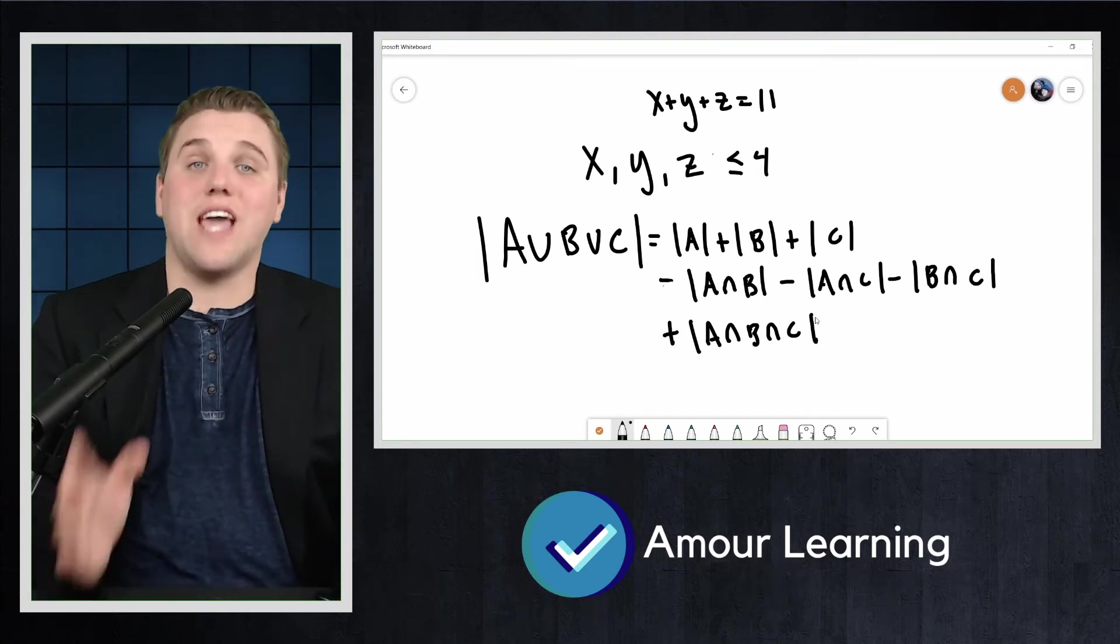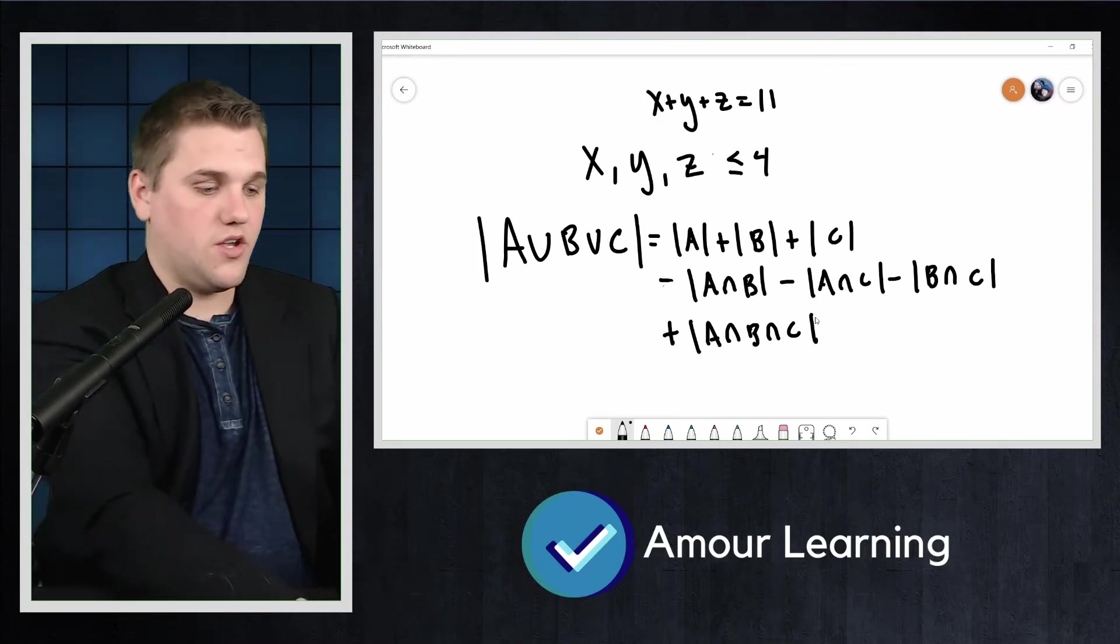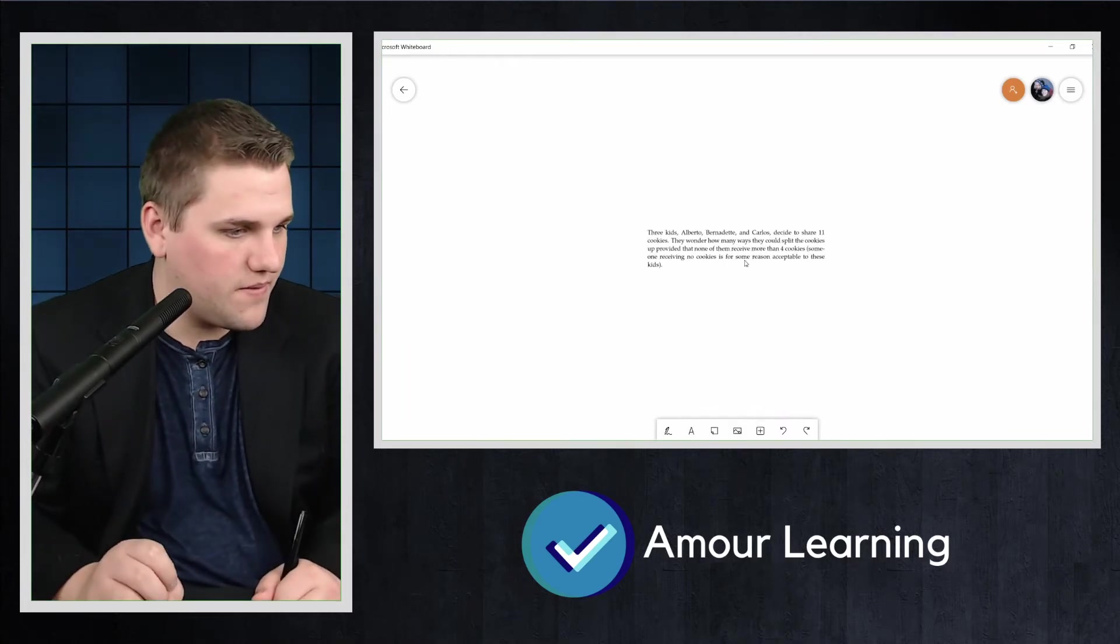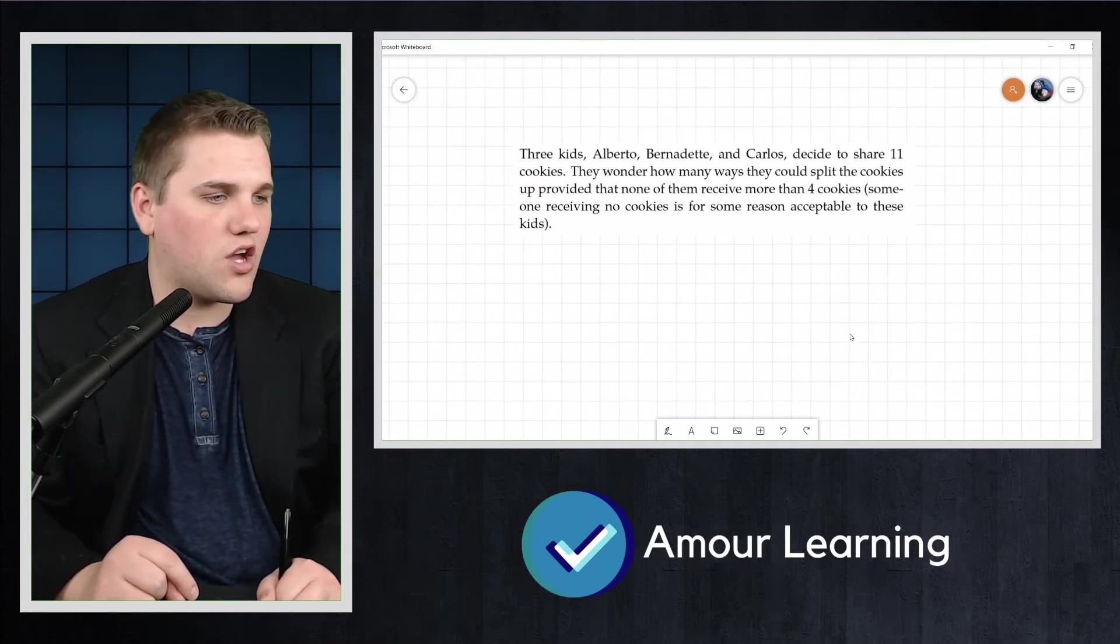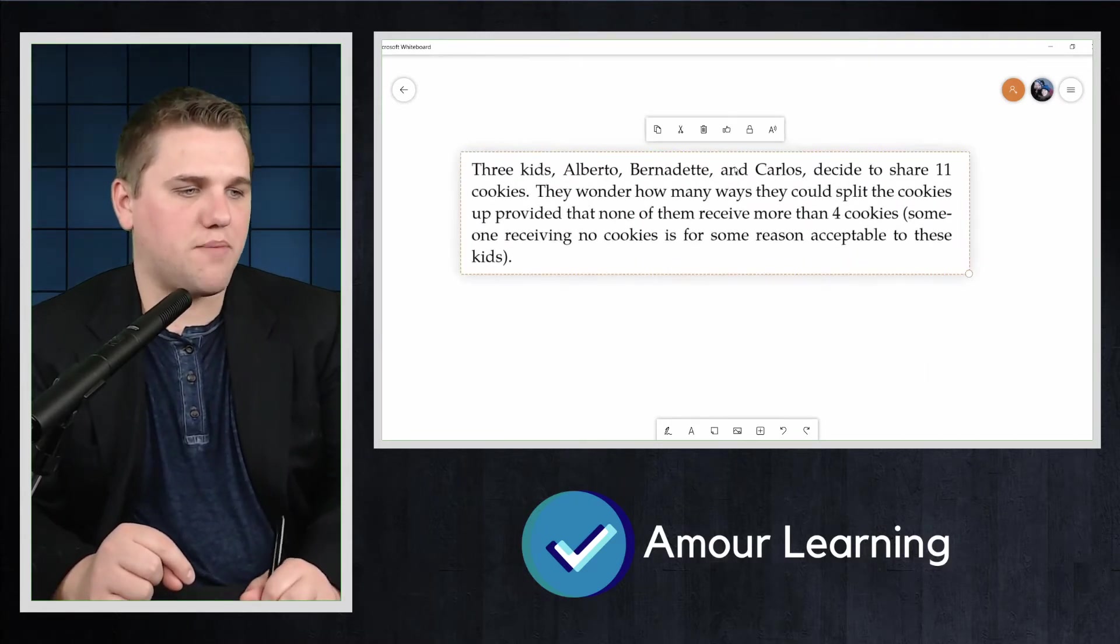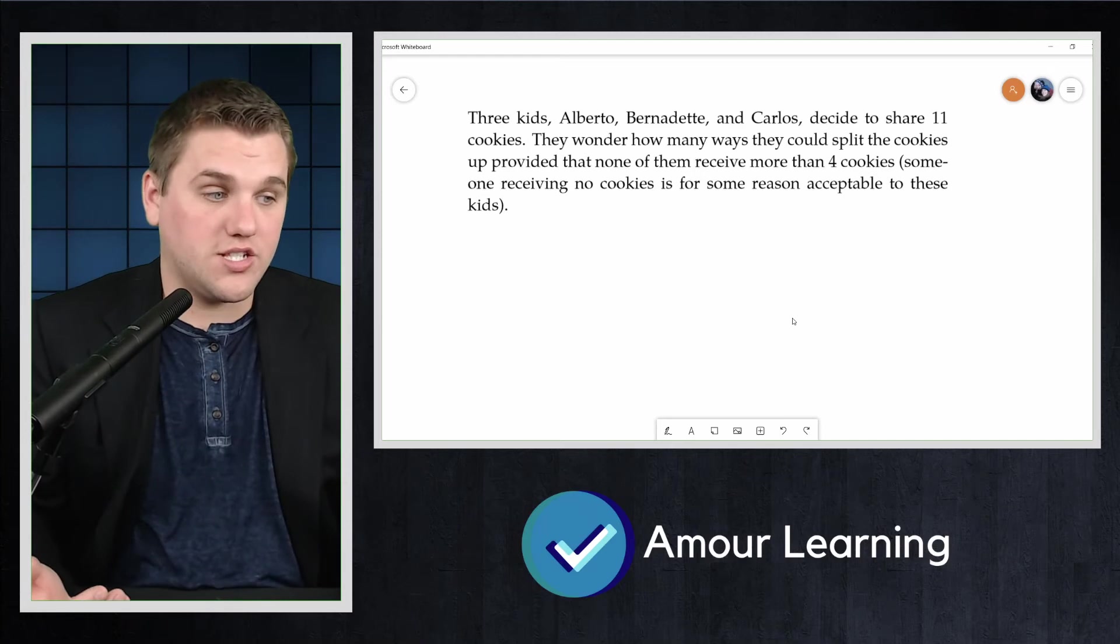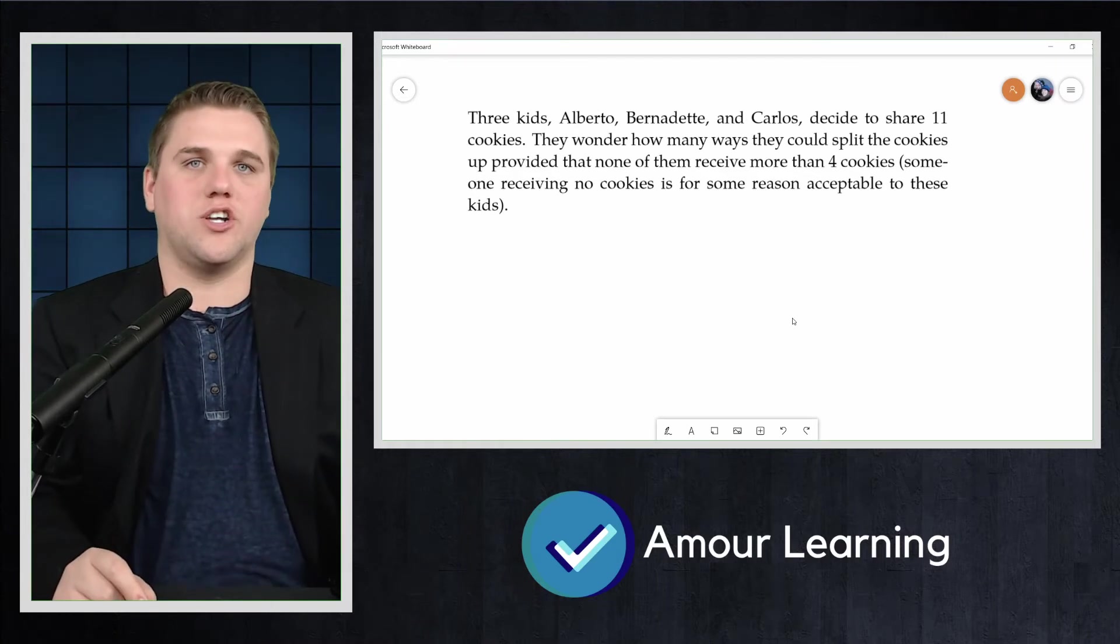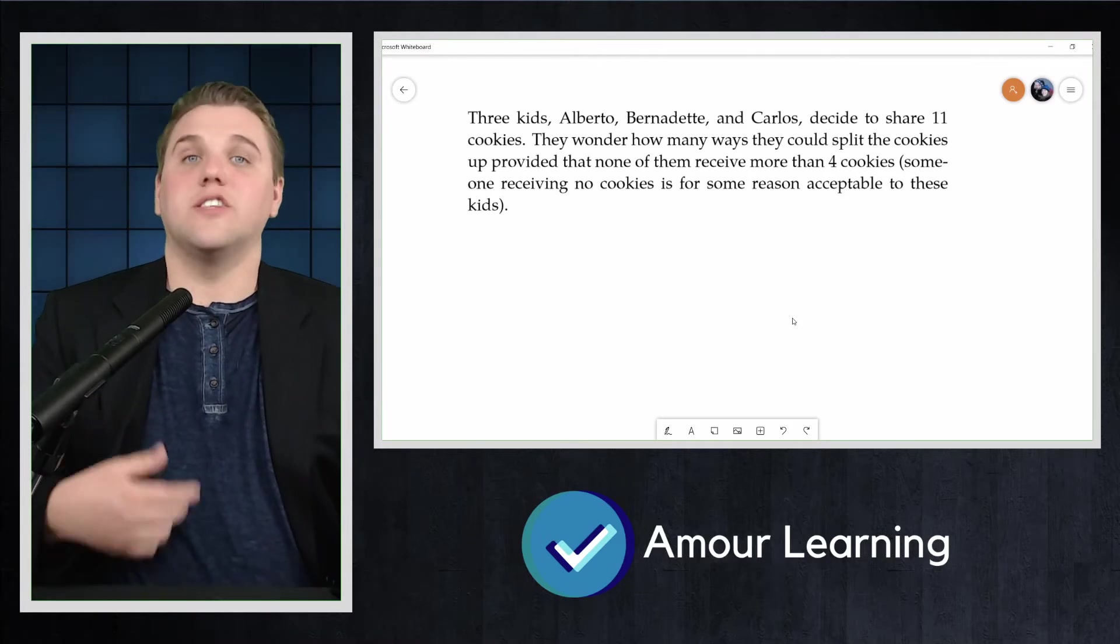Let's go through an example together to see how we use the principle of inclusion and exclusion. So here I'm going to actually write or show you what that is here. Okay, so three kids, Alberto, Bernadette, and Carlos decide to share 11 cookies. They wonder how many ways they can split the cookies up provided that none of them receive more than four cookies. Someone receiving no cookies is for some reason acceptable to these kids. Without the no more than four restriction, the answer would be 13 choose 2, using 11 stars and two bars separating the three kids.